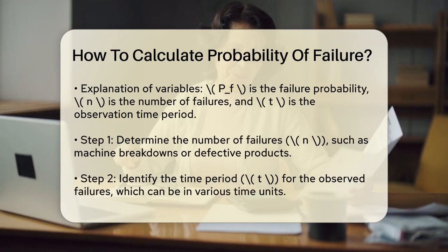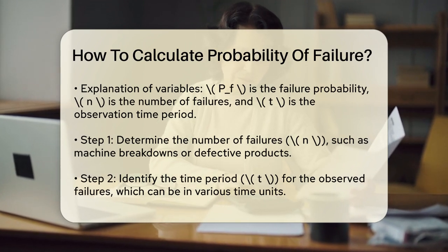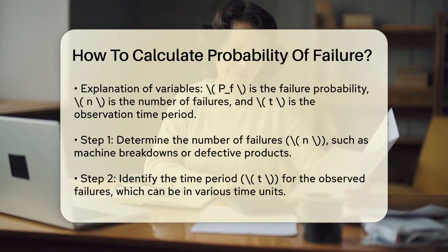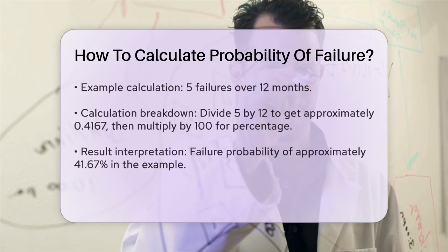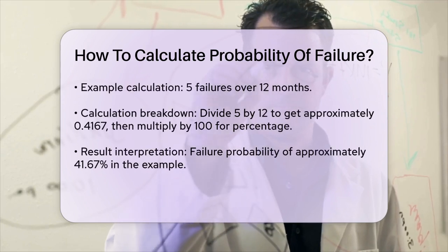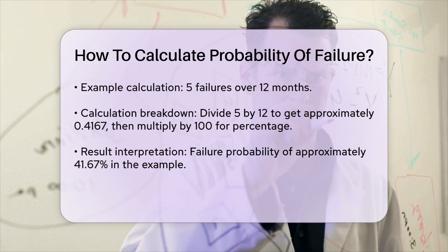Once you have these two values, you can plug them into the formula. For example, if you had five failures over a period of 12 months, the calculation would look like this: P_f equals (5/12) times 100.